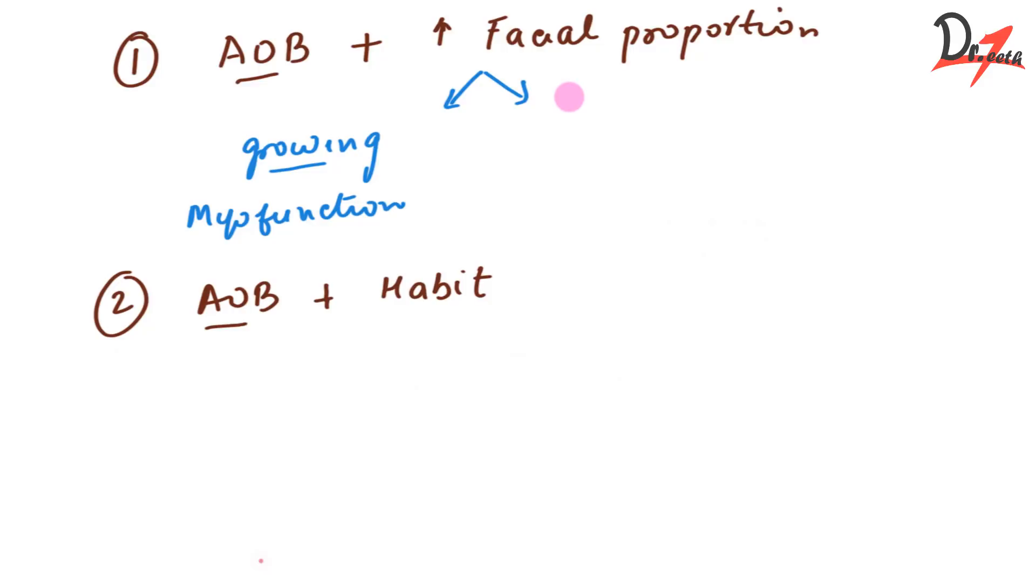And if the child has already been past the growth phase, what we are going to do? We are going to surgically correct that. So we are going for orthognathic surgery. Surgery generally involves Lefort 1 osteotomy because we have to get the maxilla posteriorly.